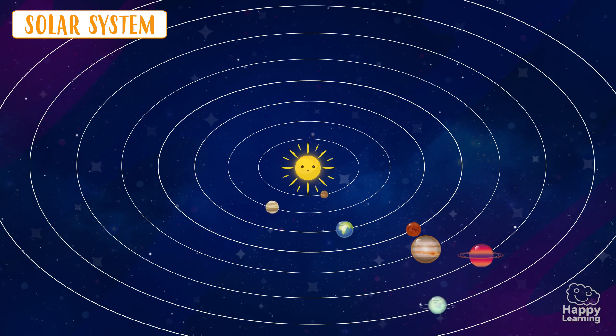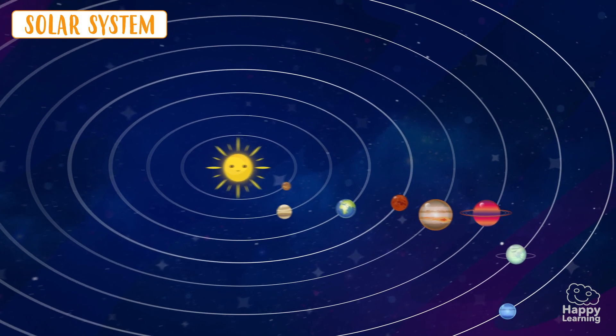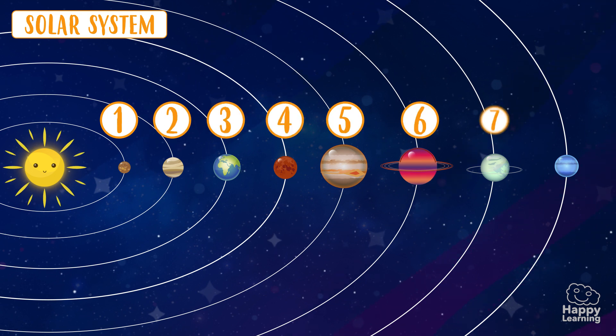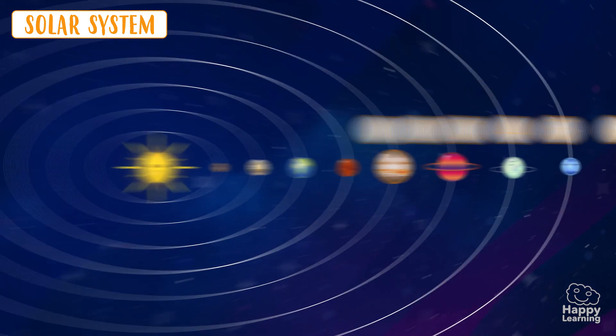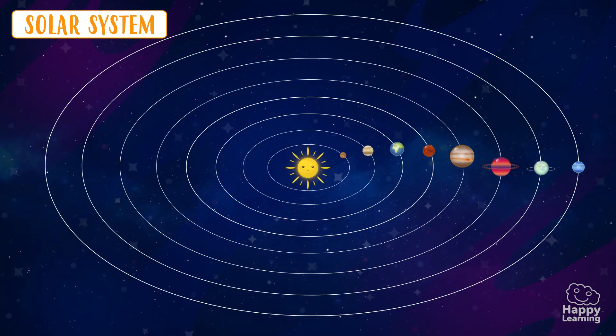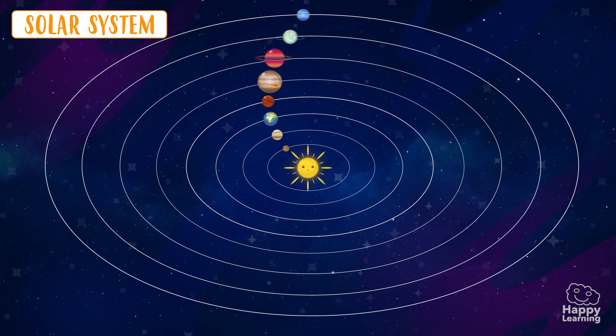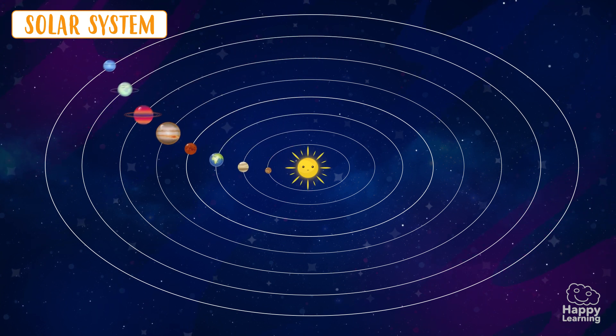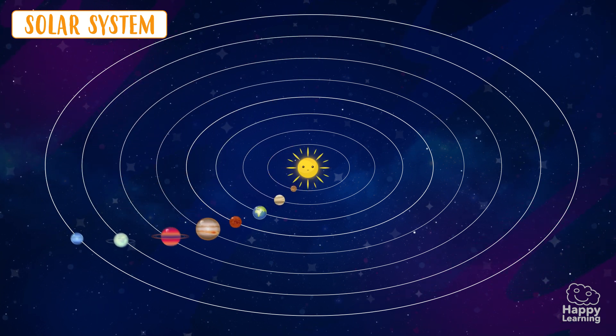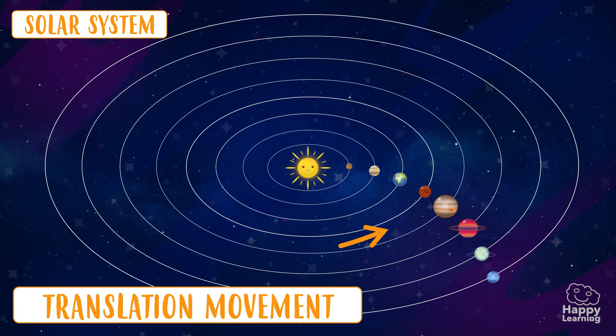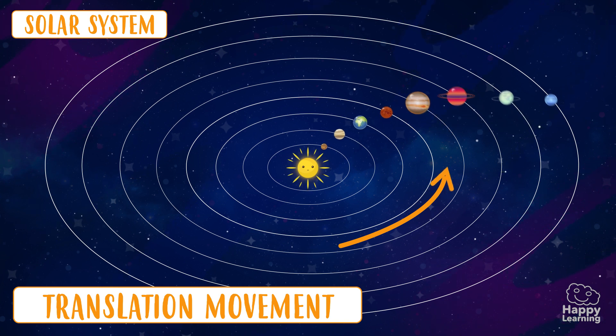In the solar system there are eight planets, and they are all moving around the sun. Do you know what this movement that they make—and you can see in the images—is called? Well, it's called rotation movement because they are rotating around the sun.